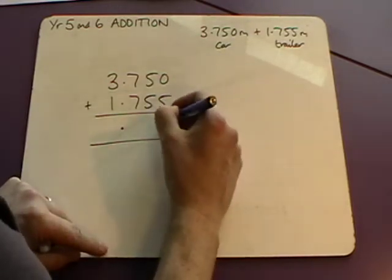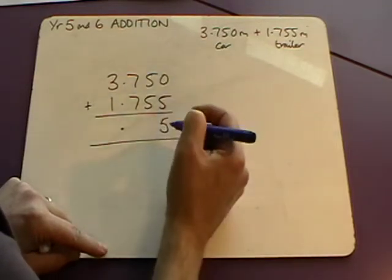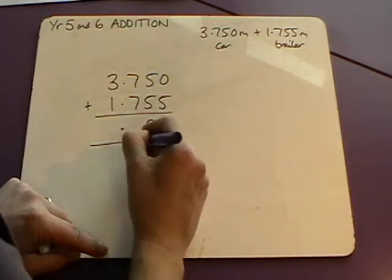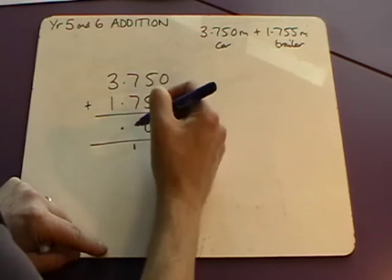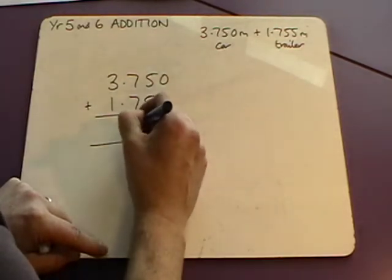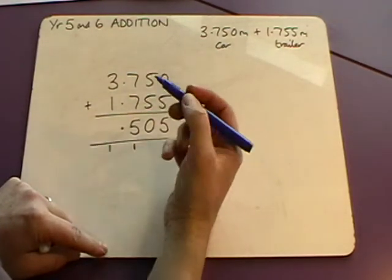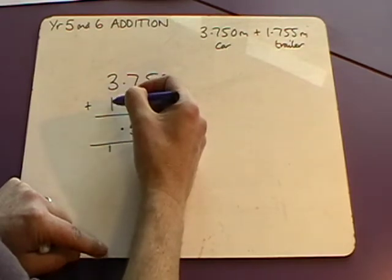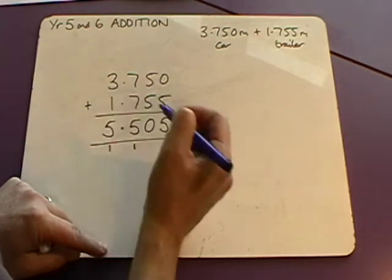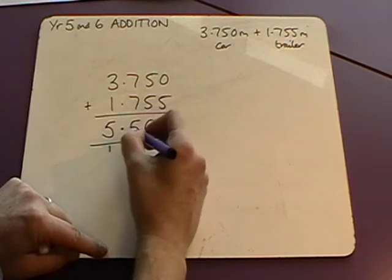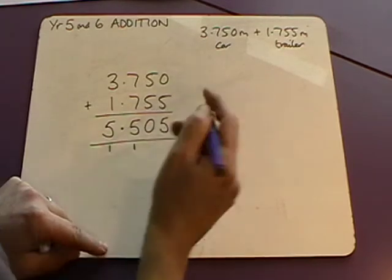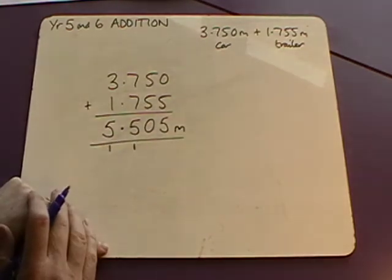0 and 5 is 5. 5 and 5 is 10 so I'm going to write a 0 and carry a 1. 7 and 7 is 14, and 1 is 15 so I'm going to put the 5 there and carry the 1. Then I've got 3 and 1 and 1 which is 5.